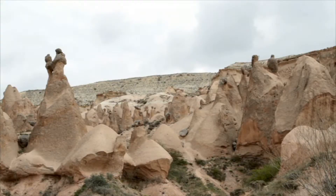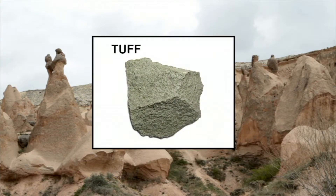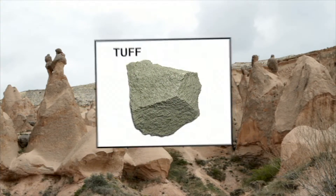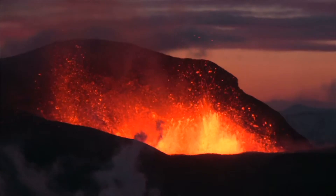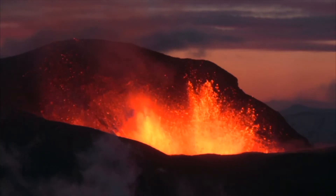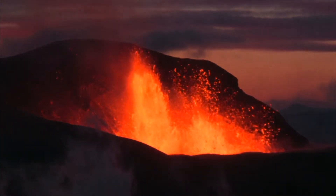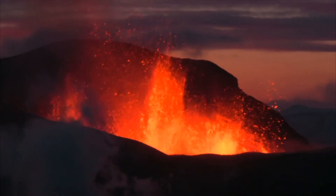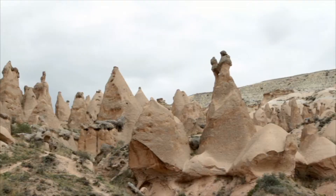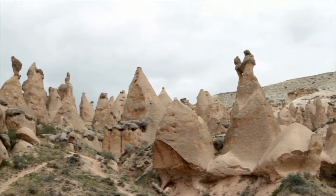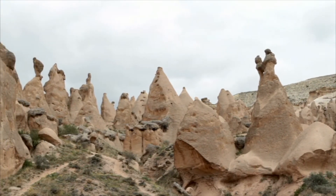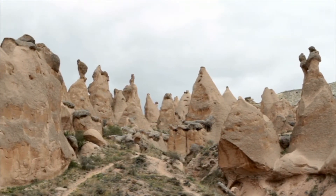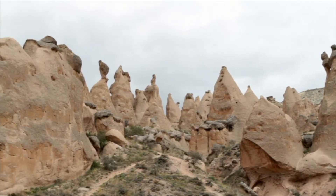These strange landforms are composed of tuff. Tuff is a very light, porous igneous rock. Tuff forms from the consolidation of volcanic ash. Because it is so porous, it erodes rapidly, giving rise to unusual shapes and formations.